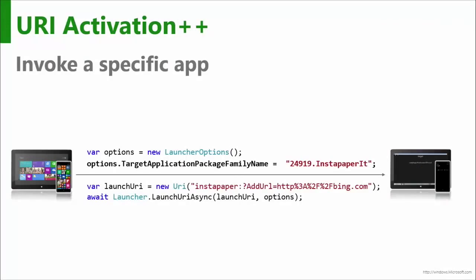Let's look at each of those scenarios. First, launching URI async to a specific app. Quite simple — you new up a launcher options object, create a new instance of LauncherOptions, and it has a property called TargetApplicationPackageFamilyName. You set that to the package family name of the target app.